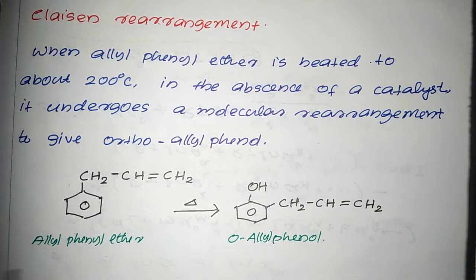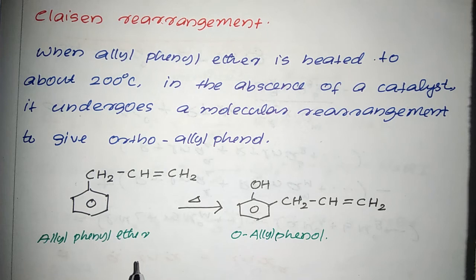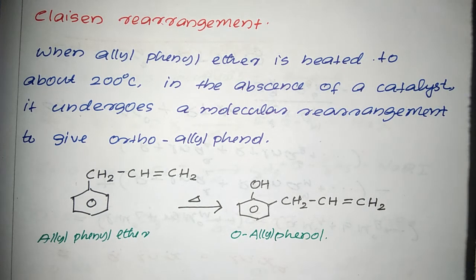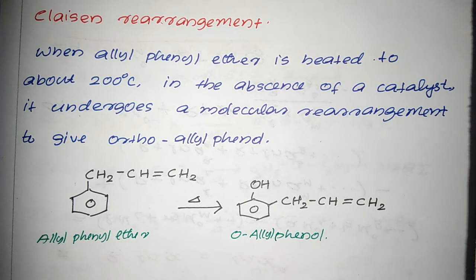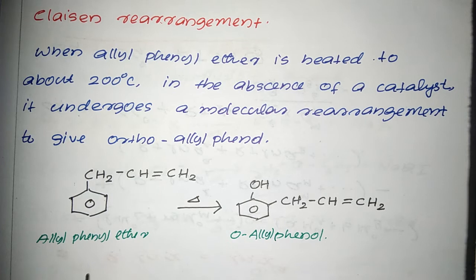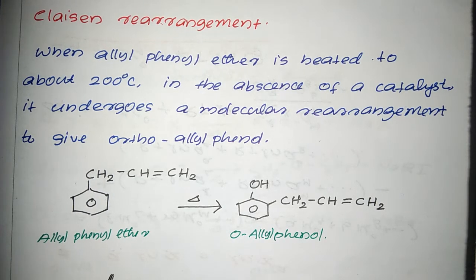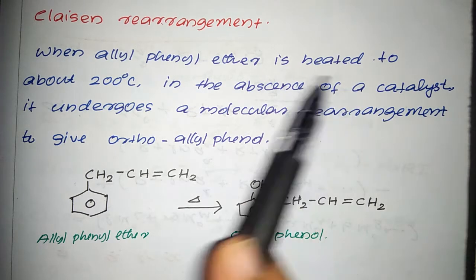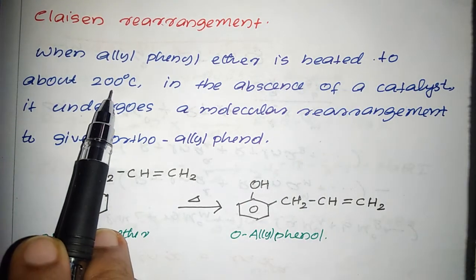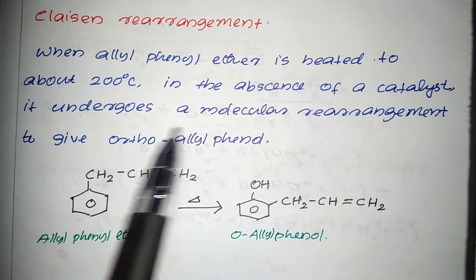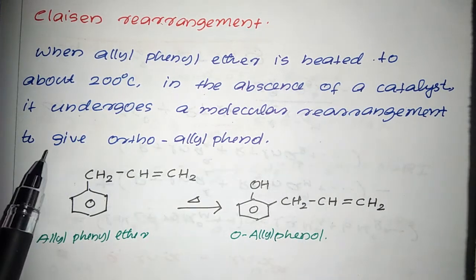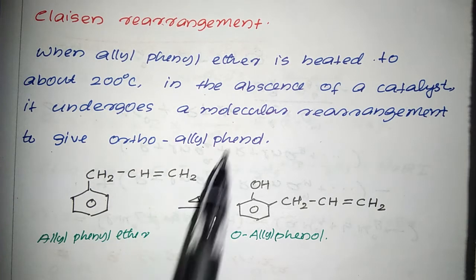Claisen Rearrangement. Allyl phenyl ether is heated to give ortho-allyl phenol — this is the Claisen Rearrangement. When allyl phenyl ether is heated to about 200 degrees Celsius in the absence of a catalyst, it undergoes a molecular rearrangement to give ortho-allyl phenol.